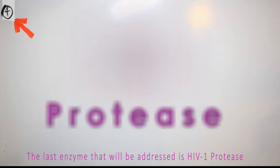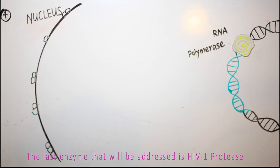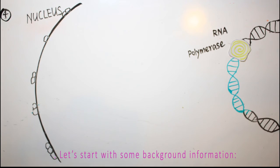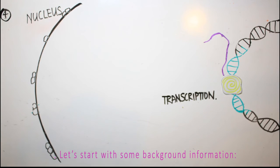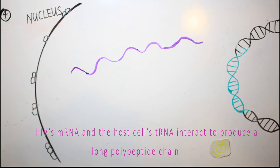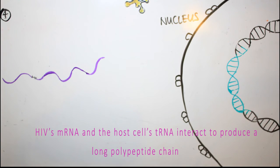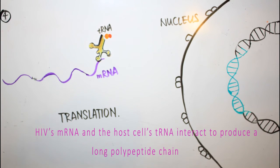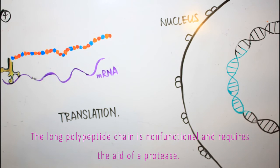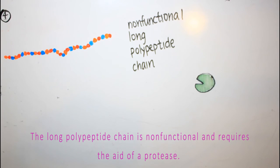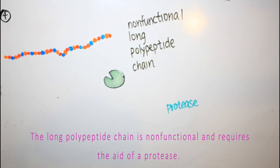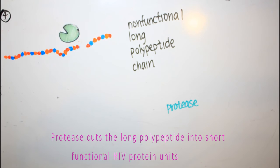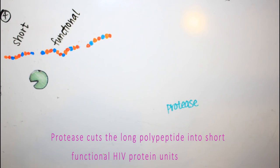The last enzyme to be addressed is HIV-1 protease. Translation occurs when HIV's mRNA and host cells' tRNA interact to produce a long polypeptide chain. The long polypeptide chain is non-functional and requires the aid of a protease. Protease cuts the long polypeptide into short functional HIV units.